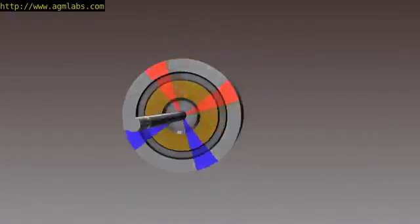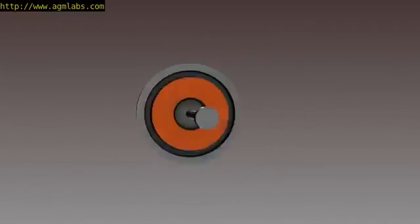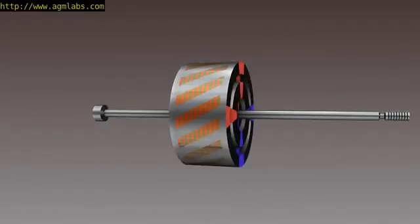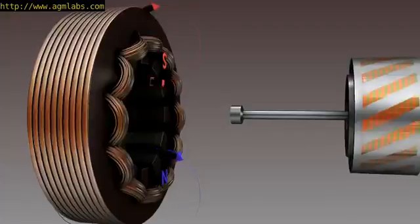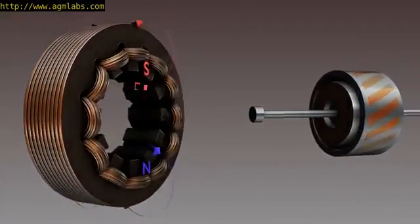The rotor is the rotating electrical component. It also consists of a group of electromagnets arranged around a cylinder, with the poles facing toward the stator poles. The rotor, obviously, is located inside the stator.